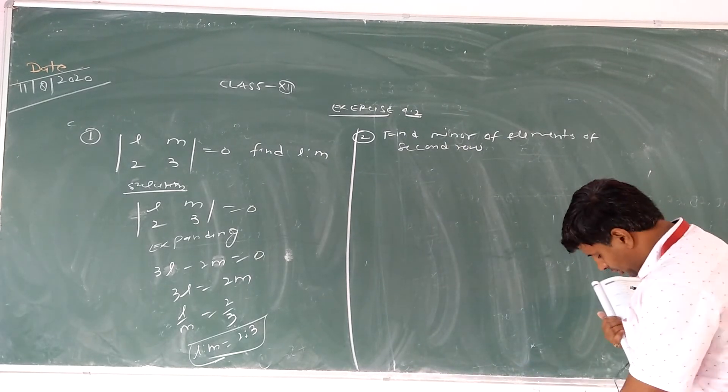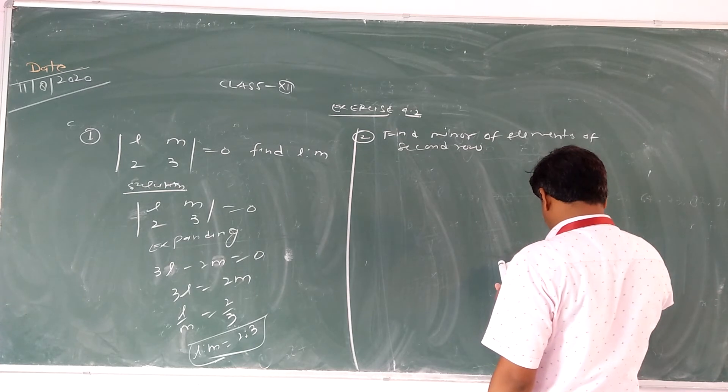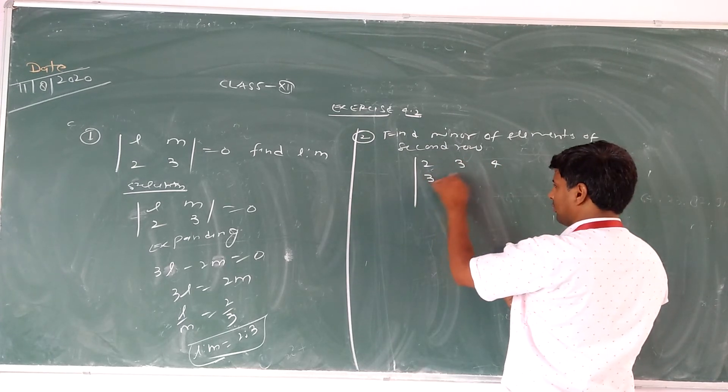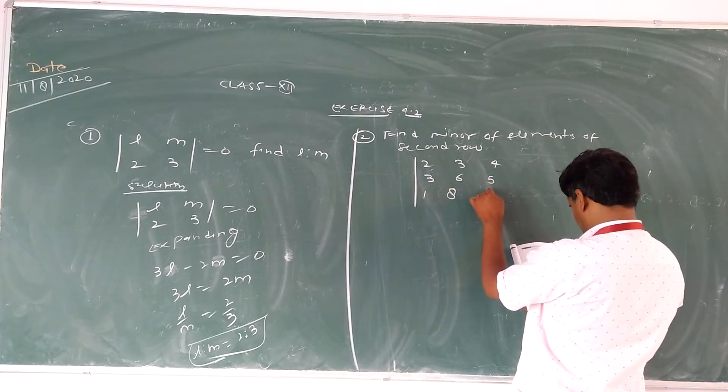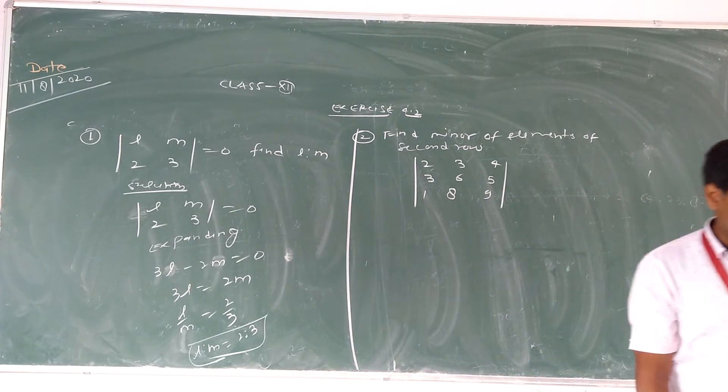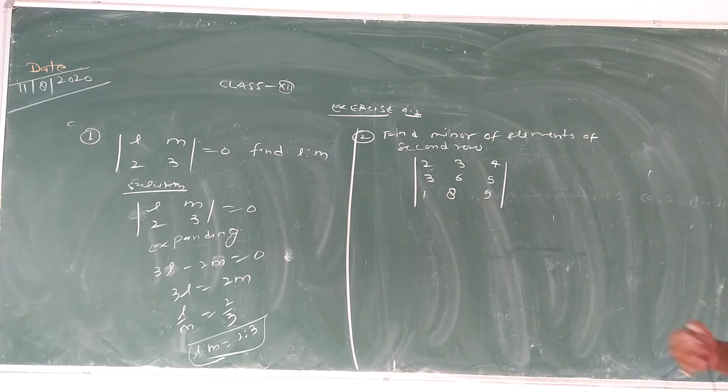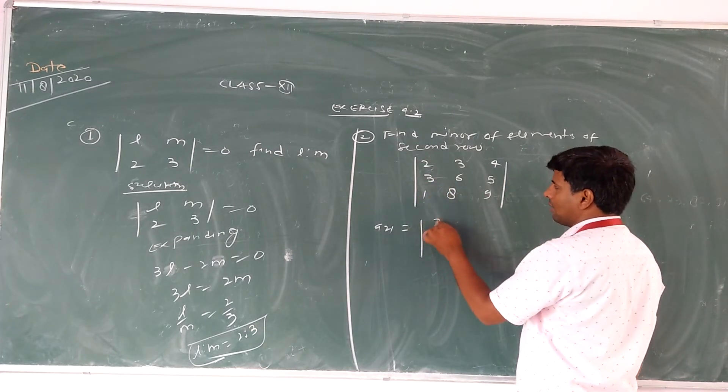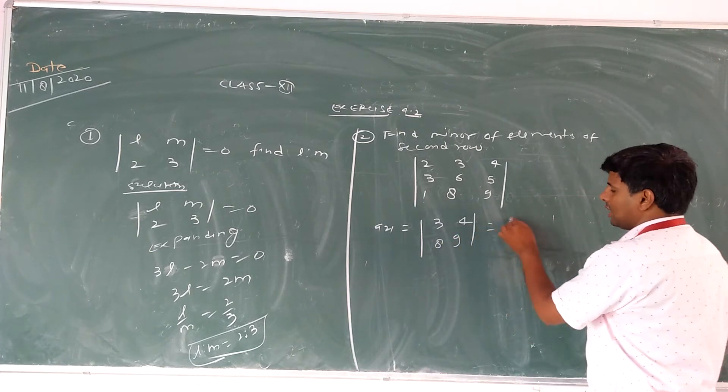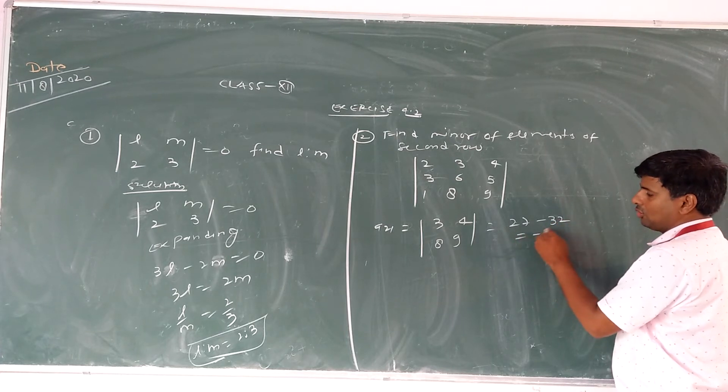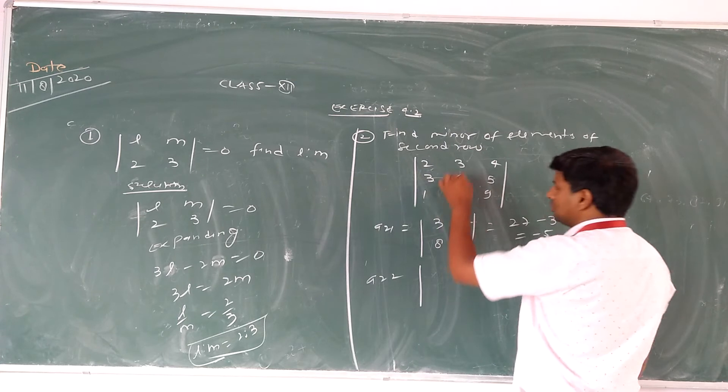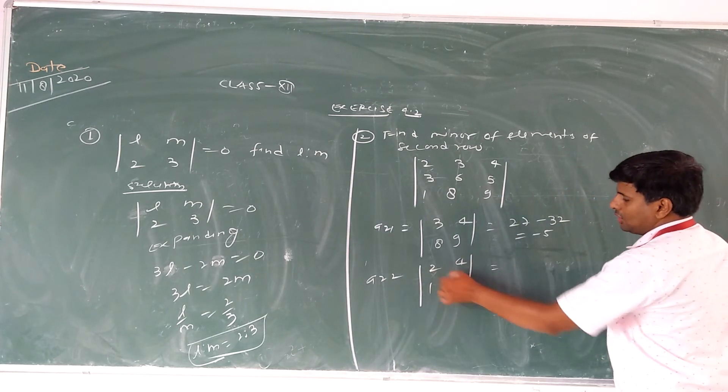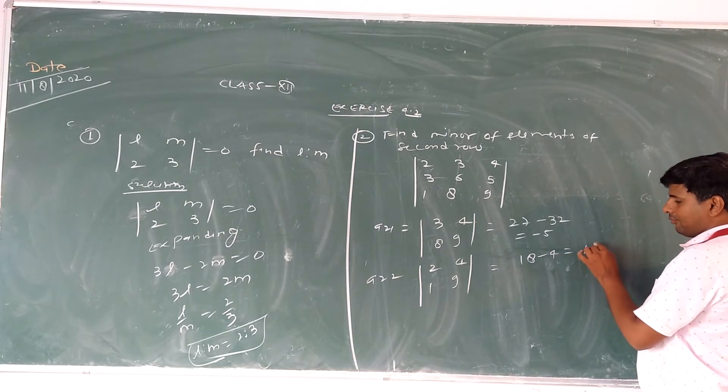Find minors of elements of second row. The determinant is 2, -3, 4; 0, 1, -1; 6, 5, 1. So for A21, we delete second row first column, leaving 3, 4; 5, 1. That is -3 - 20 equals -23. For A22, we delete second row second column: 2, 4; 6, 1. That is 2 - 24 equals -22. For A23, delete 2, 3; 6, 5. That is 10 - 18 equals -8.